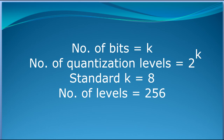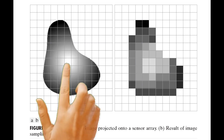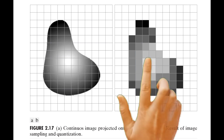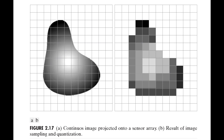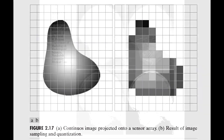Here we can see the final output. This is the original analog image, and then here you can see the result after sampling and quantization. All values within a range are being quantized to a single color, and the image has been split into pixels. This is the result of sampling and quantization.